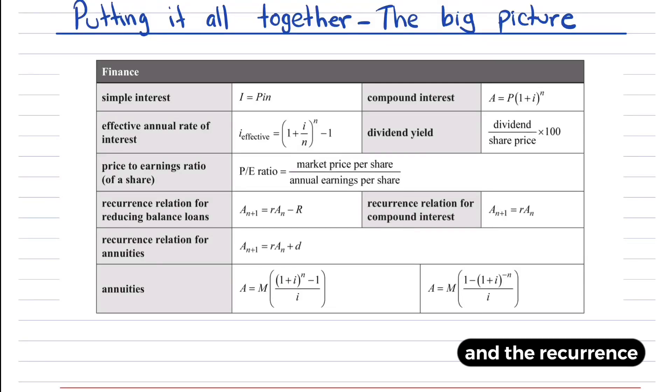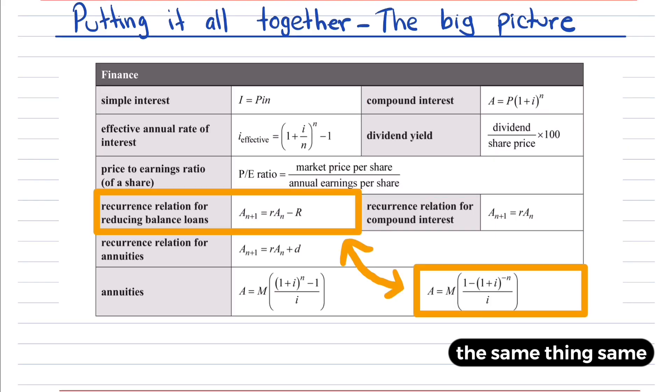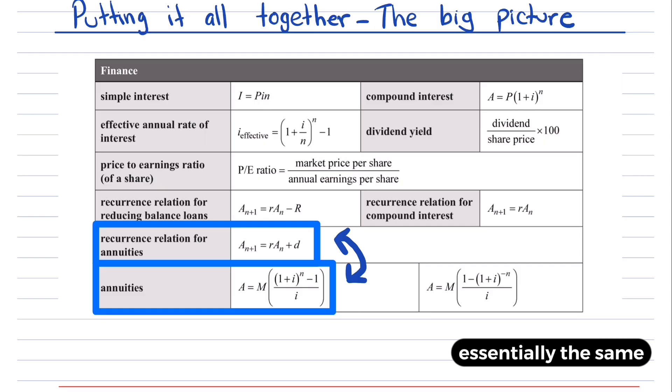Compound interest formula and the recurrence relation for compound interest, they're essentially the same thing. Same with these two here. Those two formulas are essentially the same thing, and these two formulas are essentially the same thing.